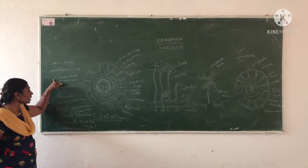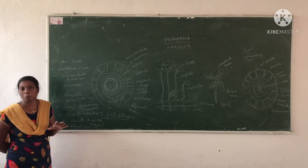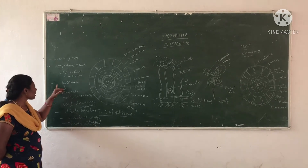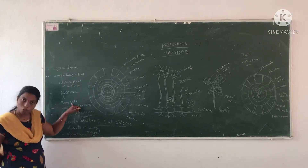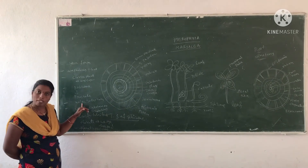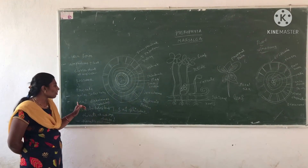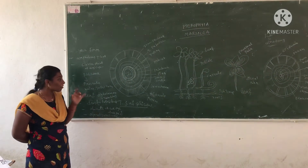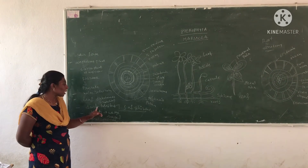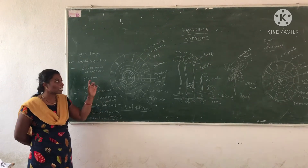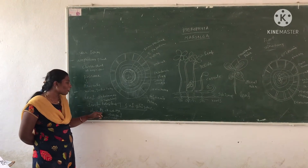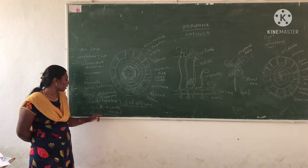Marsilea looks like a clover plant of the angiosperms. Angiosperms are a dominant group, but Marsilea looks like a clover. It has an underground prostrate rhizome. The stem is differentiated into nodes and internodes. The leaf shows dichotomous venation branching. The leaves are deeply lobed leaflets, and the leaflet shape is obovate or fan-shaped.